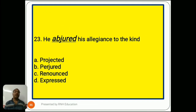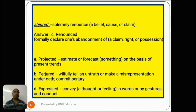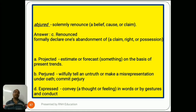Question number 23: 'He abjured his allegiance to the king.' Options are A) projected, B) perjured, C) renounced, D) expressed. Abjured means solemnly renounce a belief, cause, or claim. The answer is C) renounced, meaning formally declare one's abandonment of a claim, right, or possession. Option A, projected, means estimate or forecast something on the basis of present trends. Option B, perjured, means willfully tell an untruth or make a misrepresentation under oath. Option D, expressed, means convey a thought or feeling in words or by gestures.